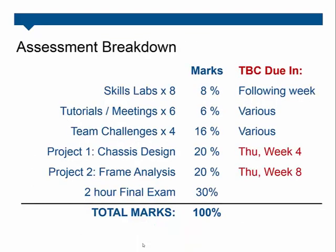Our assessment breakdown looks like the following: eight skills labs worth 8%, six tutorials or meetings worth 6%, four team challenges worth 4% each, then our two major projects — the chassis and the frame analysis — and then a final two-hour exam in the exam period, for a total of 100%. There is no hurdle in this unit, so if you have a mark of 50 however you get that, you will have passed the unit.